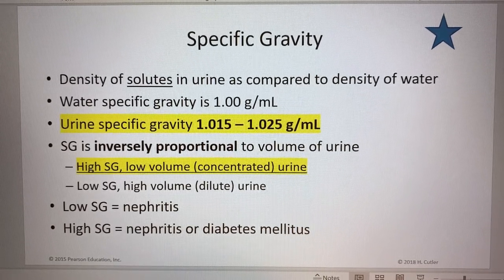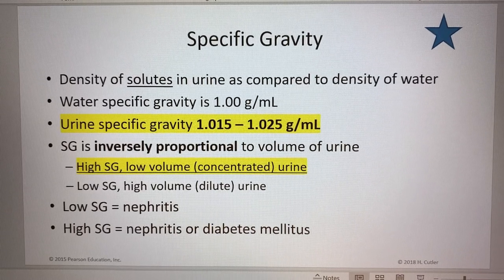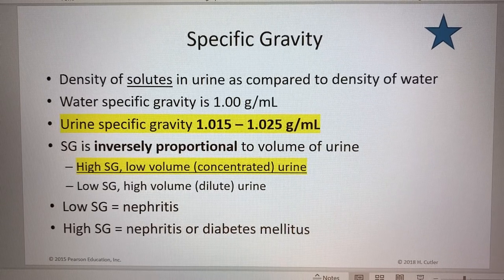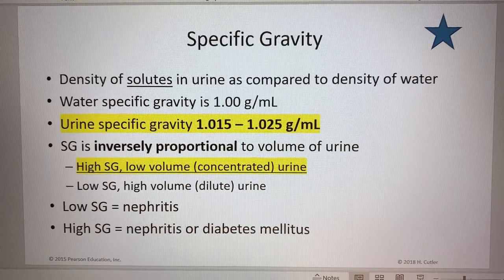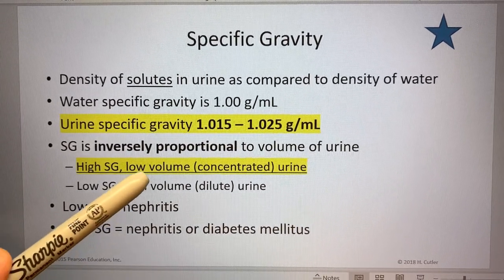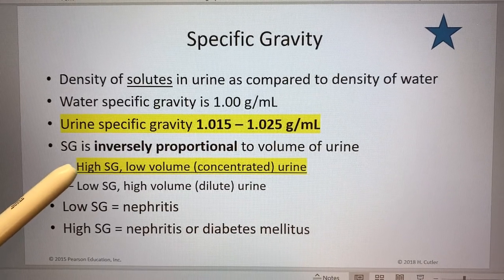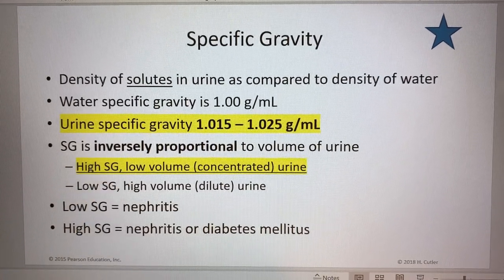Specific gravity is inversely proportional to the volume of urine. If a person is very dehydrated, they will have very dense or concentrated urine — they don't have as much water as usual. So they would have a high specific gravity, meaning a lot of stuff in their urine, and a low volume, meaning not a lot of liquid. That's what high specific gravity with low volume could indicate.